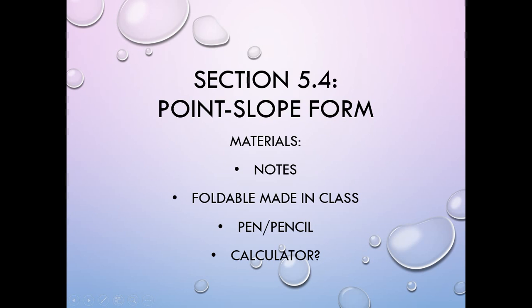Hello, legacy savers. We're going to take a look at section 5.4, which is on point-slope form. Materials you're going to want: some notes, that foldable that we made in class that we used last time, a pen or pencil, and you probably will want a calculator today.